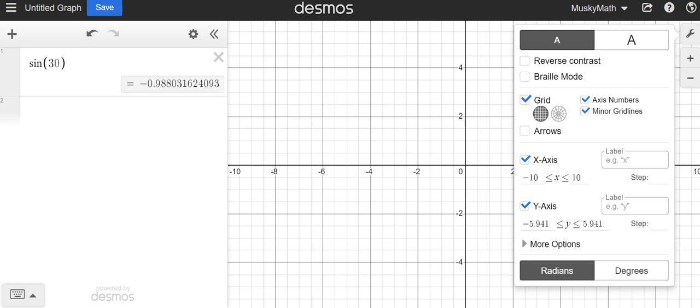Now if, however, you are using the Desmos graphing calculator, notice if I just type in sine of 30, it gets all wonky. It doesn't give me one half, it gives me that negative 0.09.